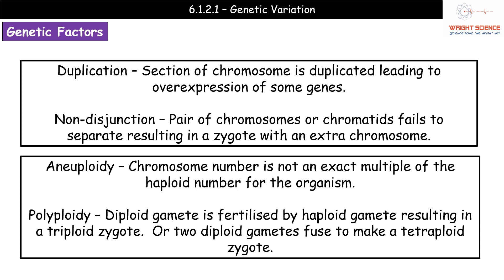The final chromosomal mutation is non-disjunction, where a pair of chromosomes or chromatids fail to separate during meiosis, resulting in a zygote with an additional chromosome — Down syndrome is a good example. Two related terms to know: aneuploidy, where the chromosome number is not an exact multiple of the haploid number for the organism; and polyploidy, where a diploid gamete is fertilized by a haploid gamete producing a triploid zygote, or two diploid gametes fuse to make a tetraploid zygote.